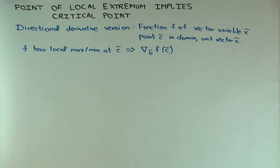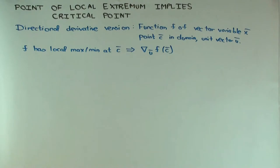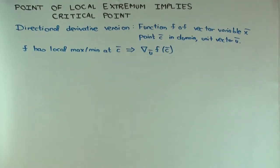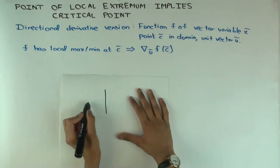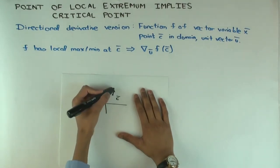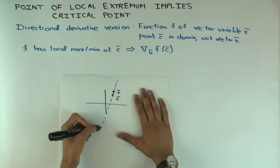I'll begin by looking at the directional derivative version. Given a function f of a vector variable x, a point C in the domain, and a unit vector u, what does the directional derivative of f in the direction of u at C mean? It's the rate of change along the unit vector's direction. You take the line C plus multiples of u and restrict f to this line.